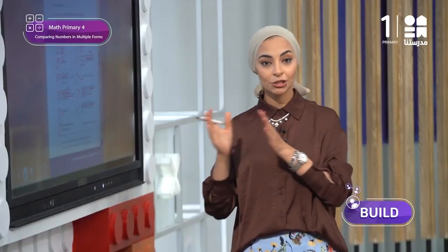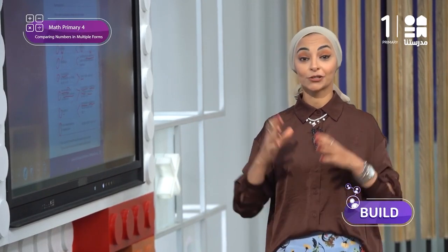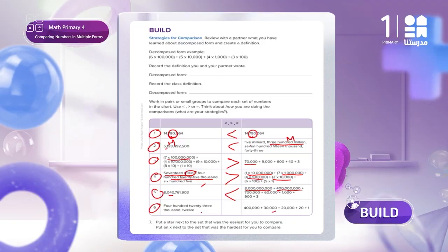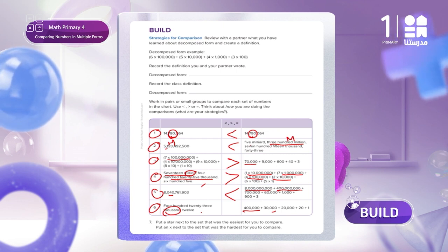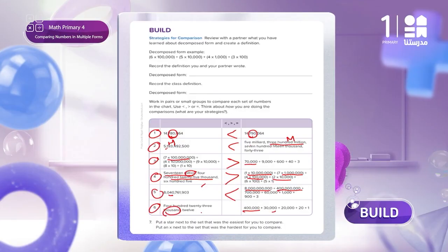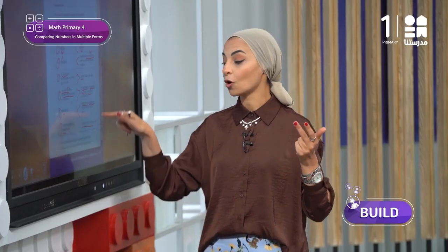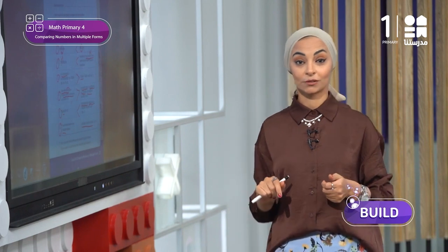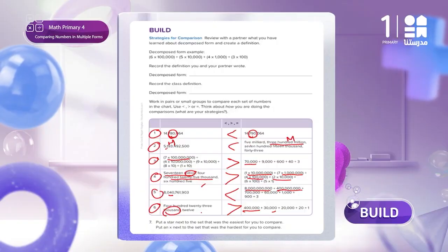Following the same method as before, we notice that the greater period in both numbers is the thousands. In the first number, I have 423 thousand. In the second number, concentrate well: I have 400 thousand plus 30 thousand plus 20 thousand — altogether that is 450 thousand. So the bigger number is the second number. Why? Because the thousands in the second number are greater than in the first one.